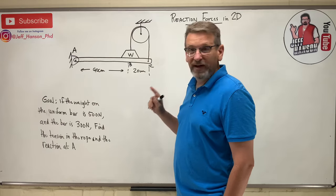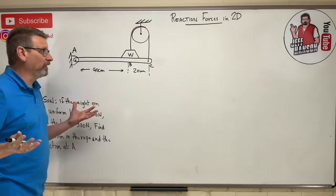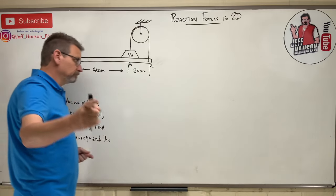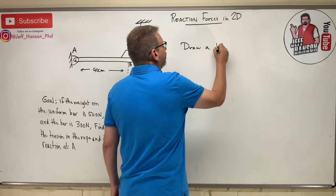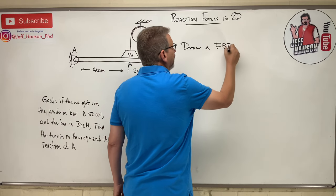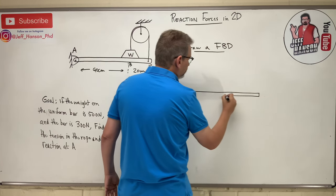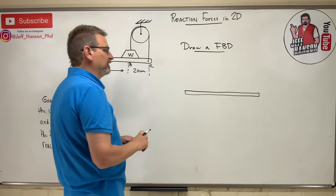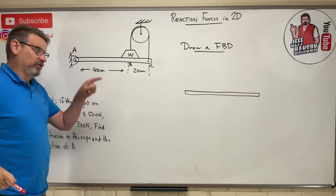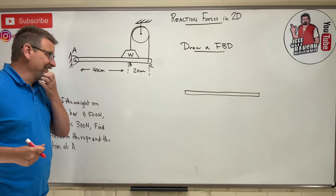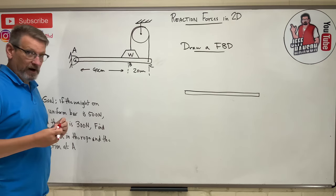Find the tension in the rope and the reaction at point A. Okay, so to solve this problem, what's step one? I heard you say it - draw a free body diagram. Okay, the free body - what are we going to free up from the world? Well, it's just the bar. That's what everything is acting on. This is the time where you push pause and draw the free body diagram, and then I'm going to come back and I'm going to draw it. Let's see if we get the same thing.